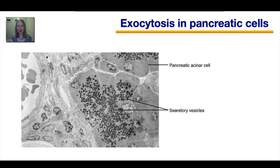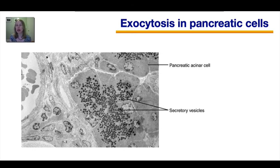Here's an example of exocytosis in your body — in your pancreas. This shows pancreatic cells, and all those little black dots are vesicles. Your pancreatic cells produce large quantities of digestive enzymes that need to be released and delivered to your small intestine, so there is constant exocytosis happening in your pancreas.